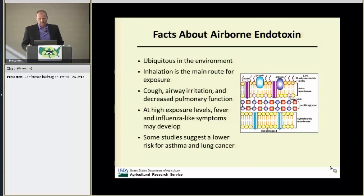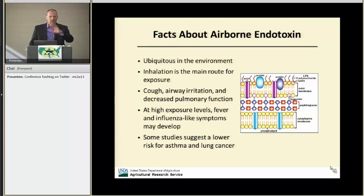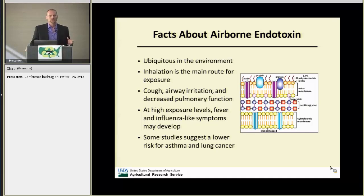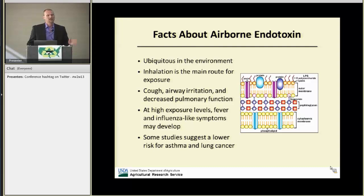I mentioned airborne endotoxin — April and I have done a lot of work on this topic. What is endotoxin? Endotoxin is the lipopolysaccharide from the outer membrane of gram-negative bacteria. They're ubiquitous in the environment. Inhalation is the main route of exposure. At fairly low acute concentrations, you can develop cough, airway irritation, and pulmonary dysfunction. At high exposure levels, you can develop influenza-like symptoms, and those in the cotton industry develop byssinosis. Interestingly, some studies suggest a lower risk for asthma and lung cancer among dairy workers.